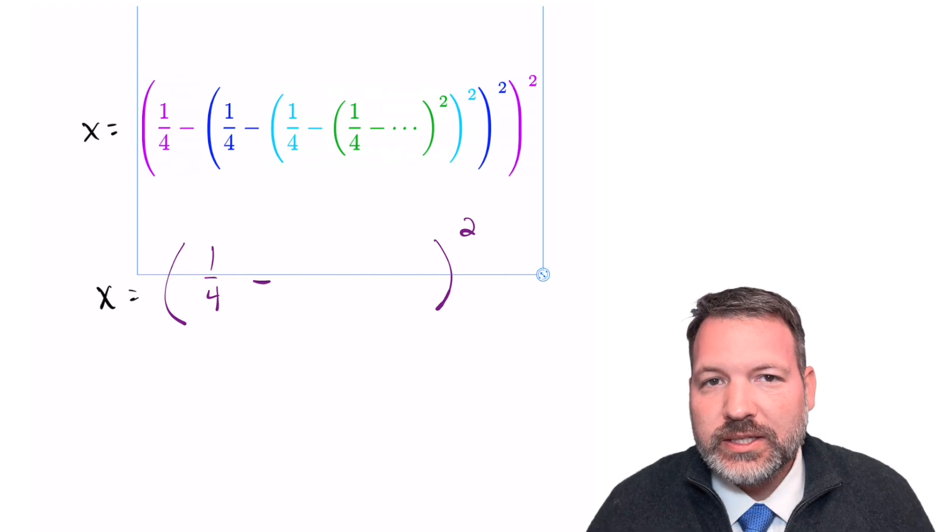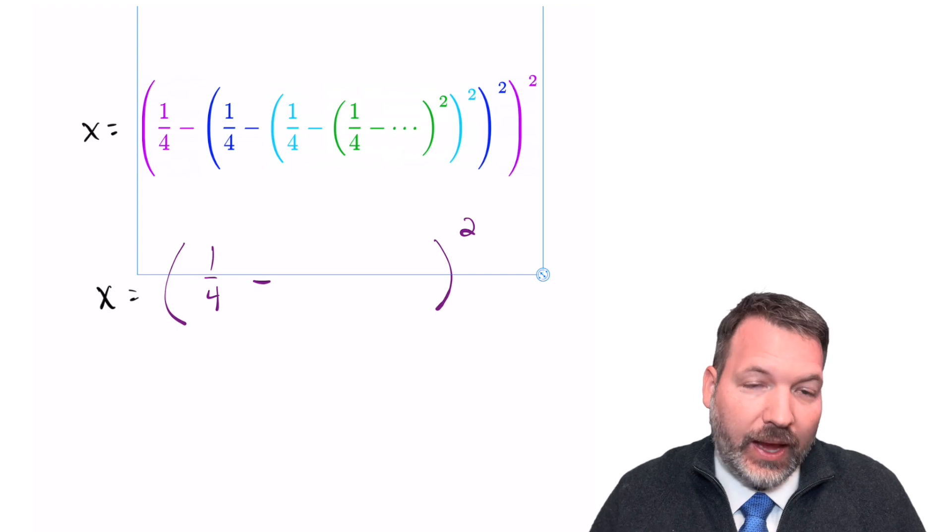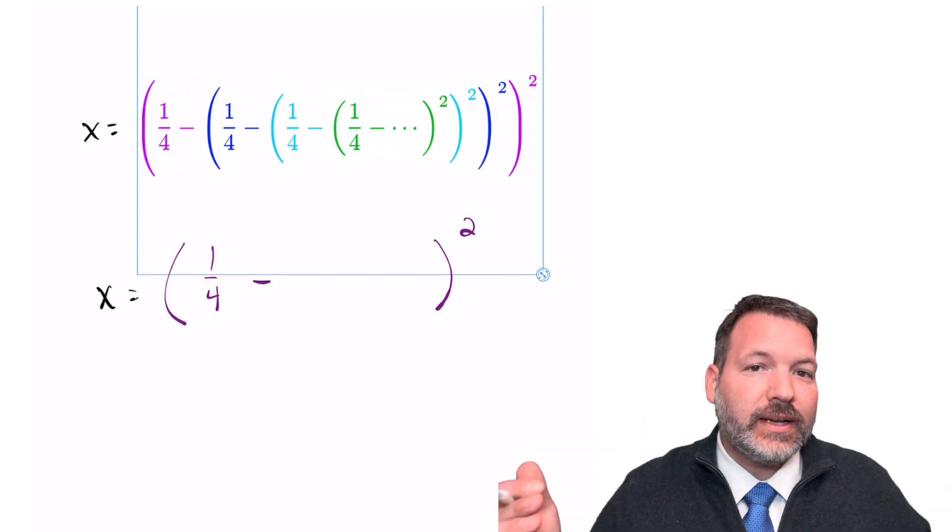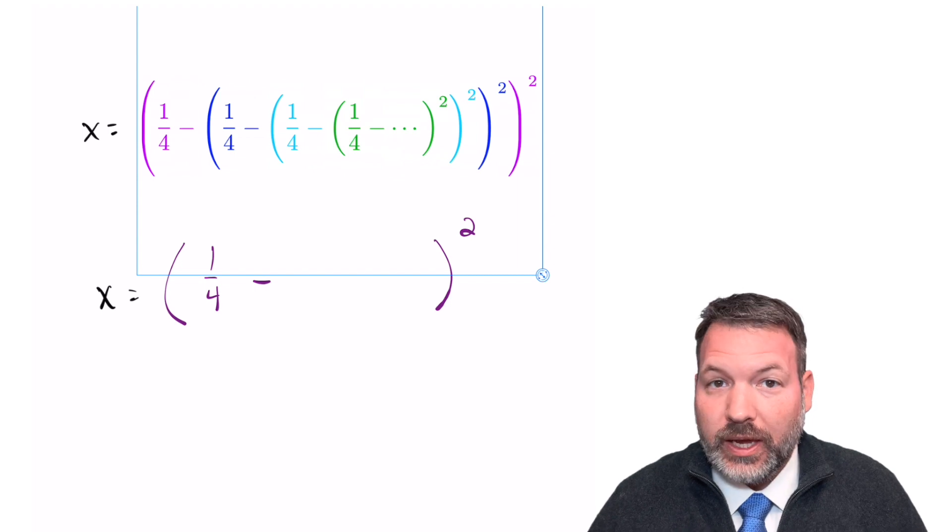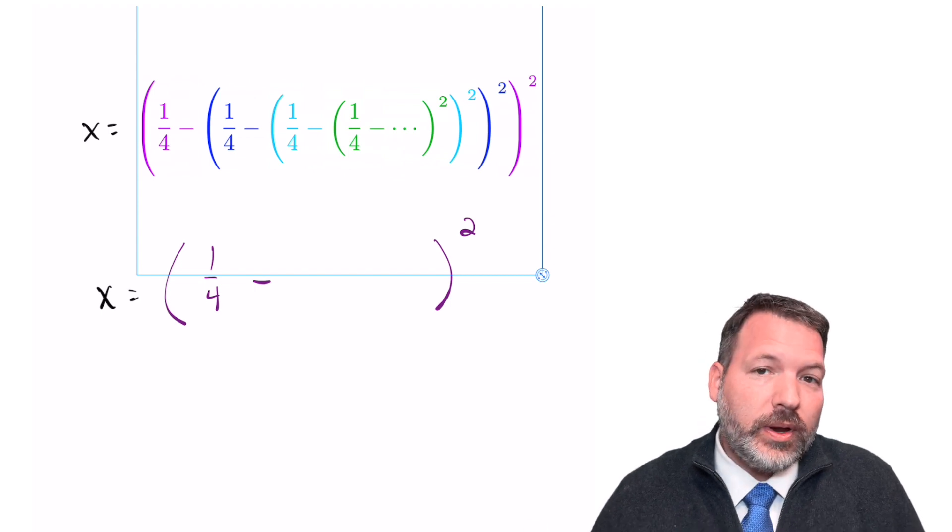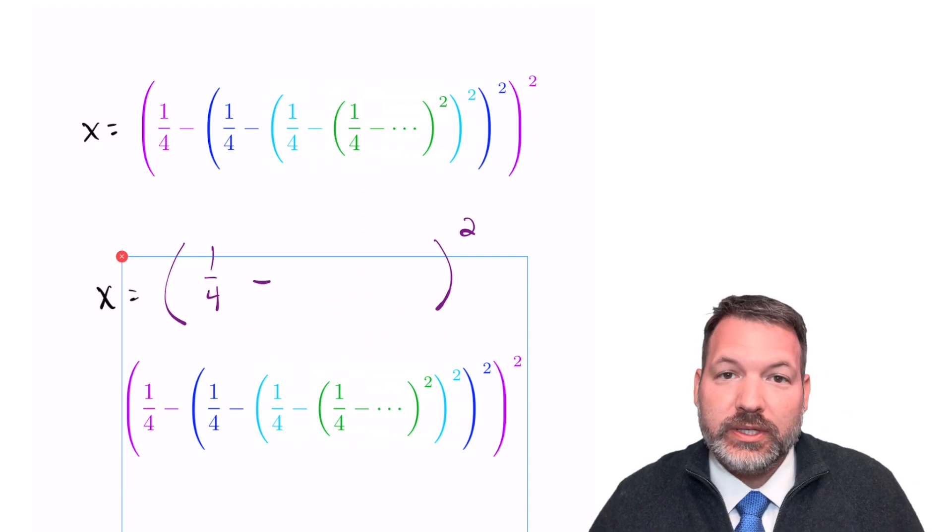we're looking at the value of the series itself. That is, if this nested series is equal to x, whatever number x is, we can also say that x is going to be equal to the next level out of that series. That is, we can take the value of the series itself.